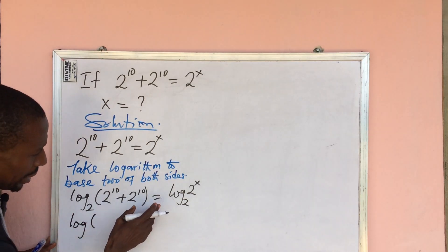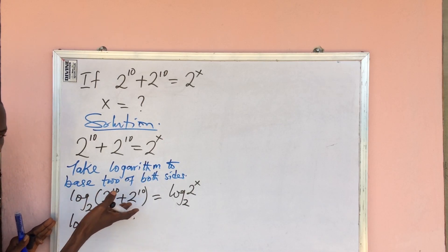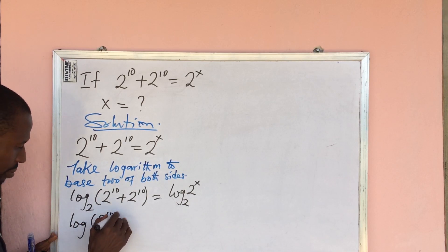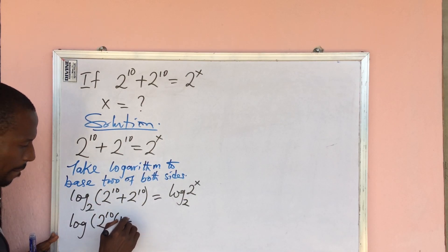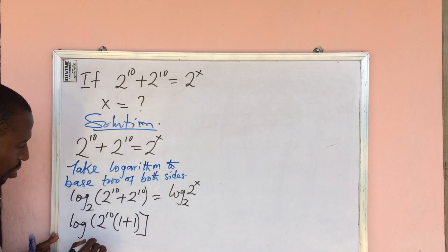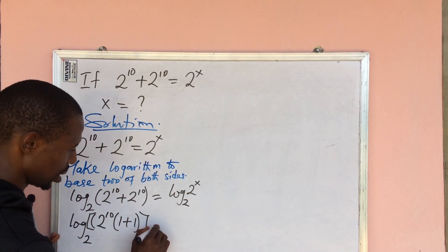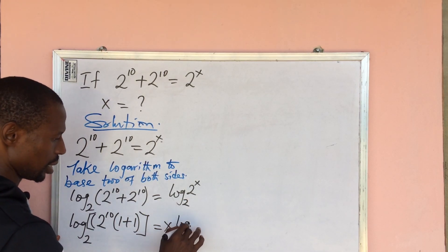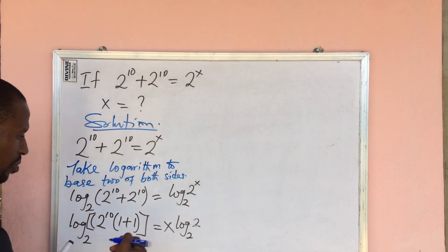Now on the left hand side, we can factor out 2 to the power of 10. If we do that, this will give us 2 to the power of 10 bracket. If we factor 2 to the power of 10 out, it's going to give us 1 plus 1 close bracket log 2 base 2 equal to, like I said, x log 2 base 2. So from here we proceed.